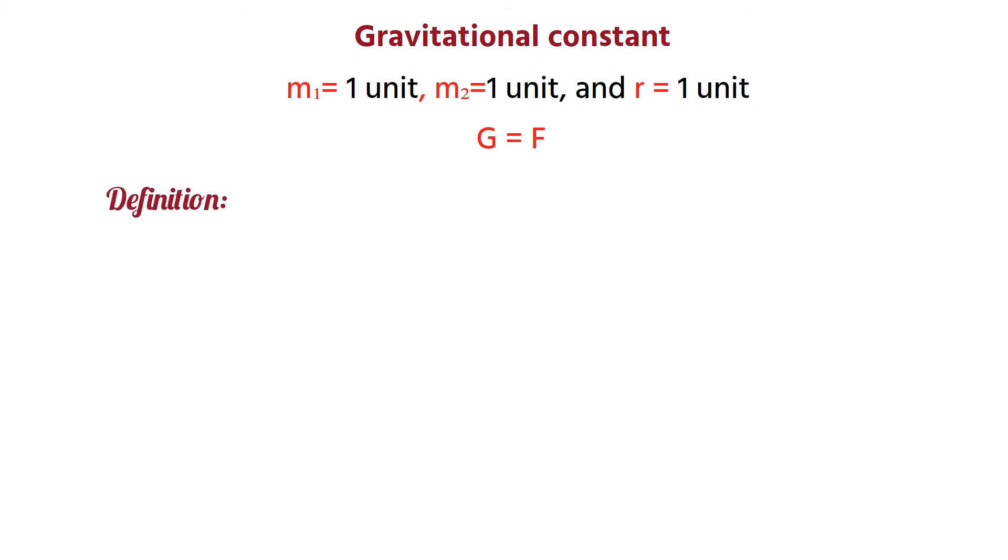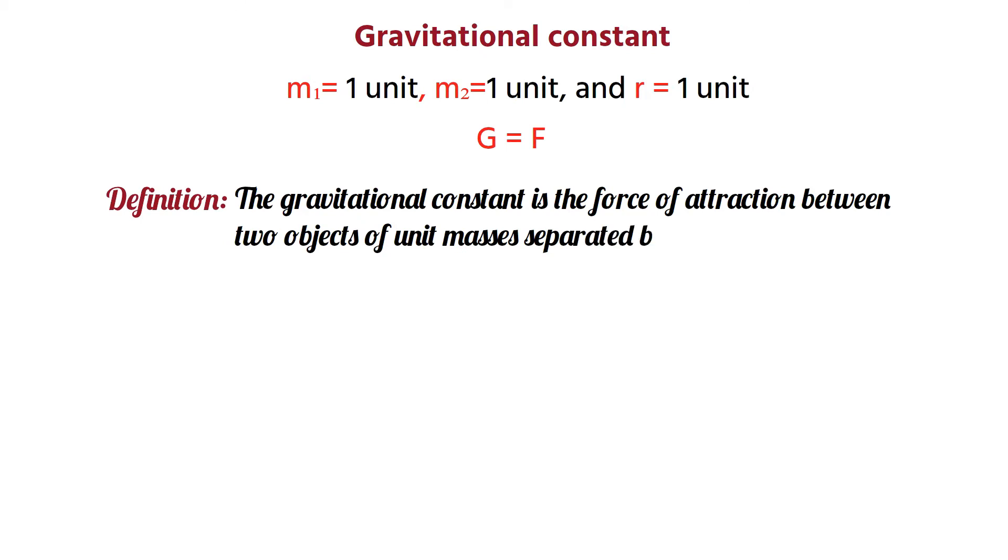This simply defines the gravitational constant as follows: The gravitational constant is the force of attraction between two objects of unit masses separated by unit distance.